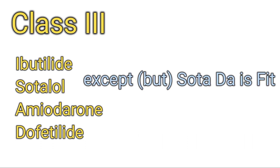Class 3 group drugs contain Ibutilide, Sotalol, Amiodarone, and Dofetilide. The mnemonic is BAT SOTA DA FIT: BAT means Ibutilide, SOTA means Sotalol, DA means Amiodarone, and FIT means Dofetilide. Note that Sotalol has LOL in its name but it is NOT a beta blocker — Sotalol is FIT, and Dofetilide also belongs to Class 3.